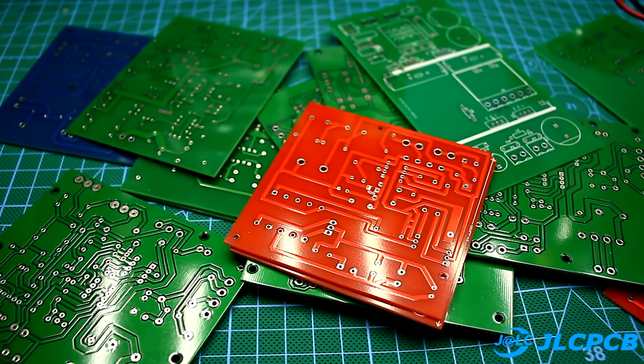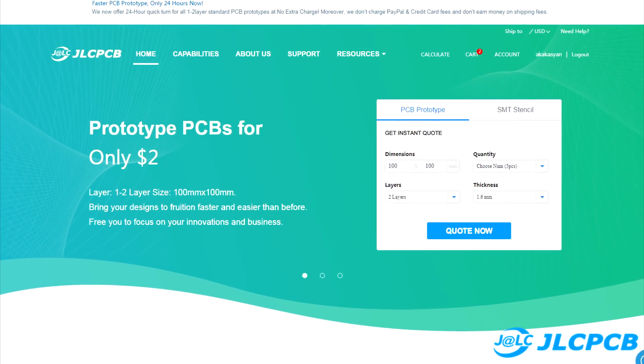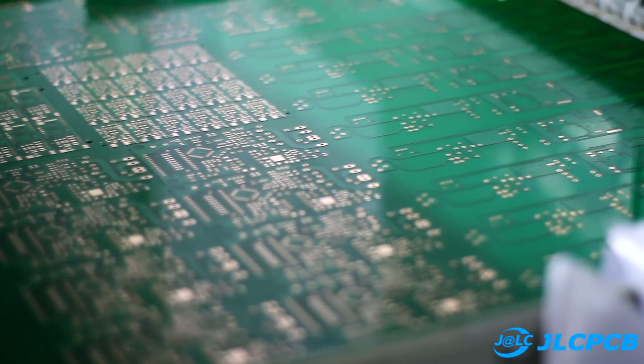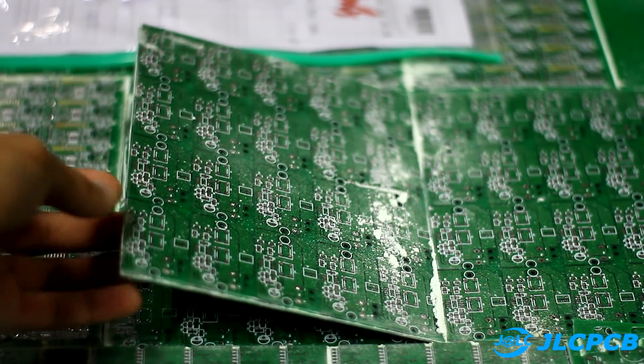And you can always order beautiful factory boards on the JLCPCB website. Production time is only 24 hours from the time the order is received. Boards can be of any size, color and number of layers. The factory can manufacture the boards of any complexity.